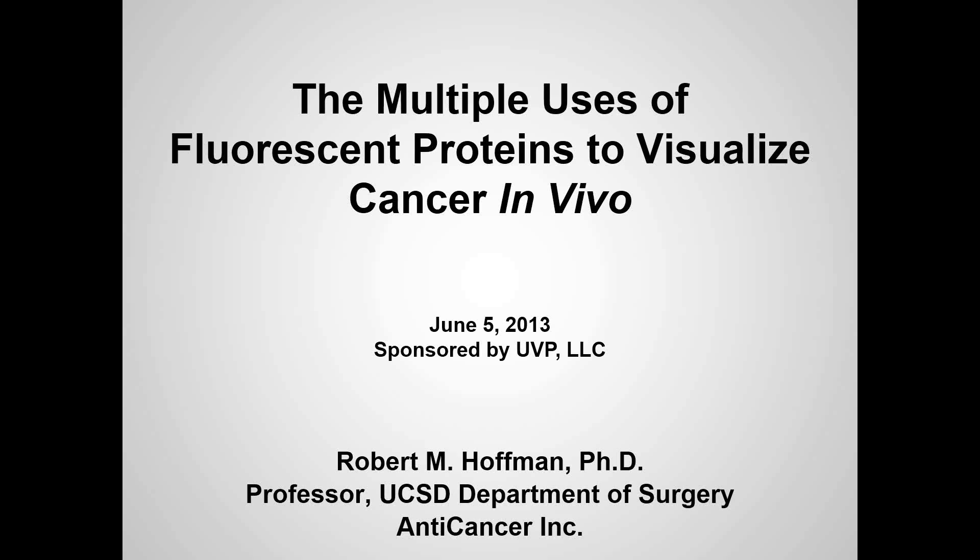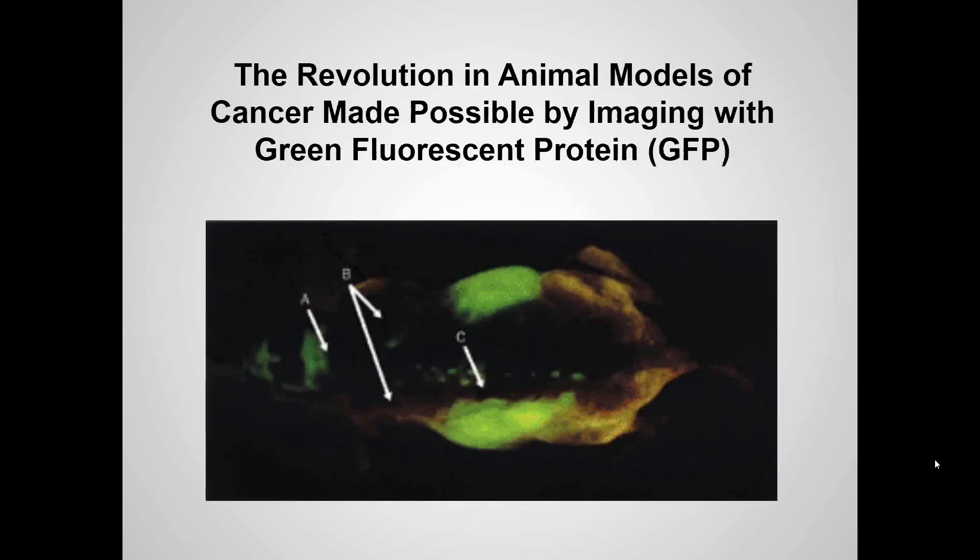Thank you, Mike. I'd like to share with everybody some of the technology that we've developed for imaging cells within the animal. This has been made possible by the choice of fluorescent proteins that are now available that can label any kind of cell, including any kind of cancer cell, and it's also been made available by new imaging technologies such as those developed by UVP. I'd like to give you now some background to these new developments.